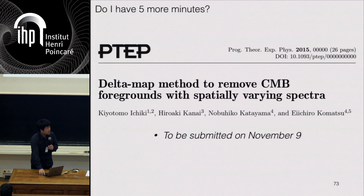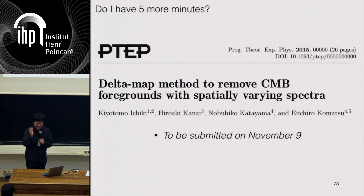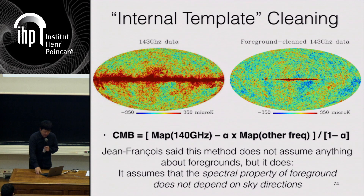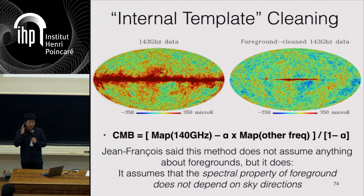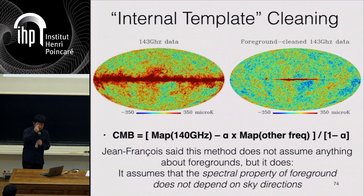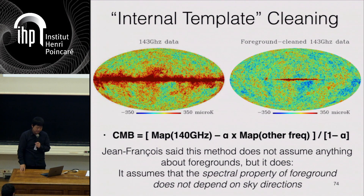I have 10 minutes left, doing much better than I thought. This is the paper we finished during this trimester — very proud of that. On Monday, Jean-François gave a very nice talk on CMB foreground cleaning and showed something like this — this is our version of it. You take a 140 GHz map and subtract another frequency channel times alpha to remove dust, synchrotron, or whatever, then de-bias CMB by dividing by one minus alpha. That's so-called internal template cleaning — it's a template because you use dust at higher frequency as a template, and it's internal because you don't use any extra datasets.